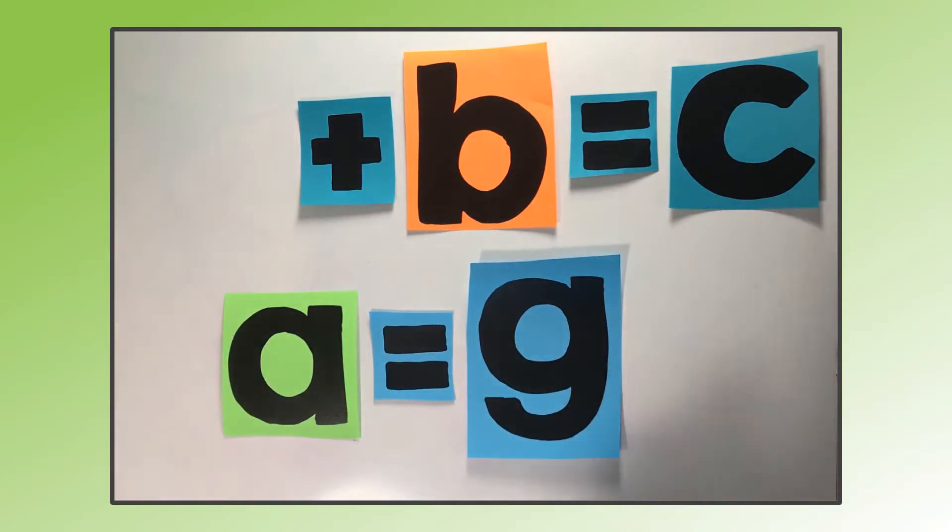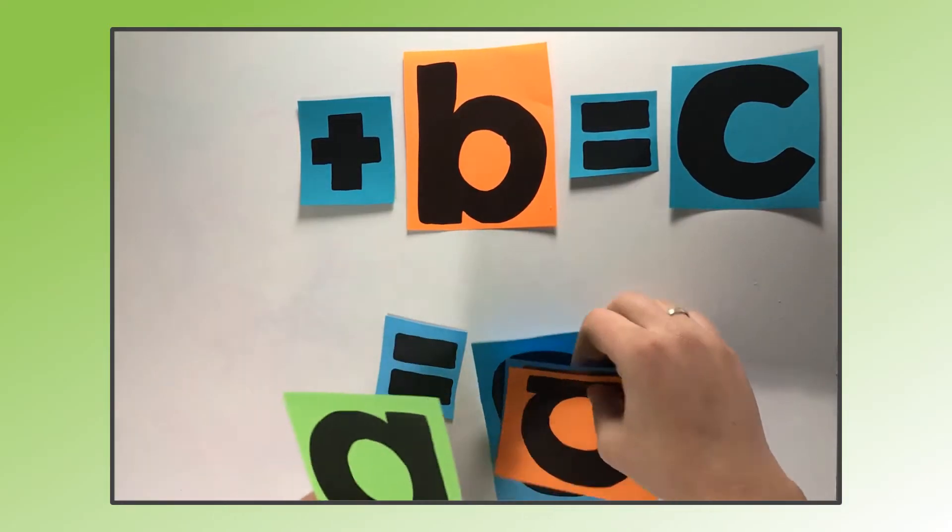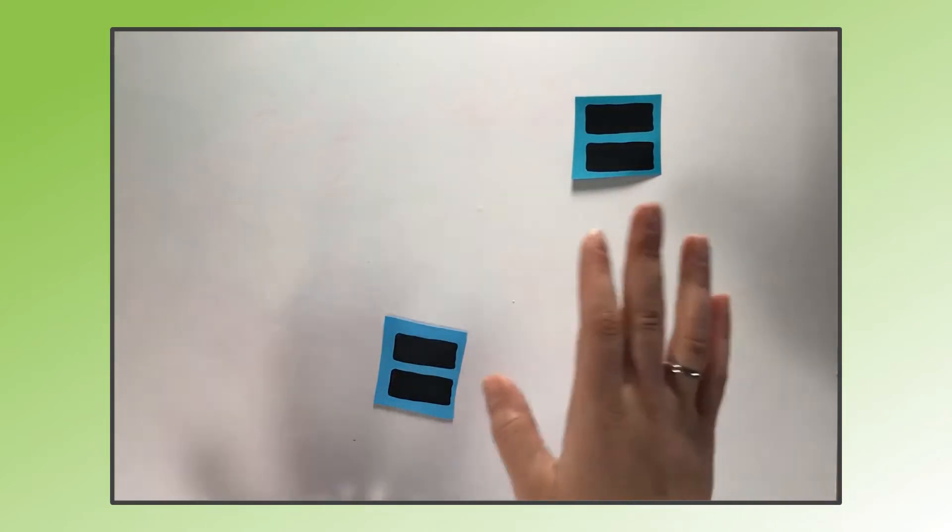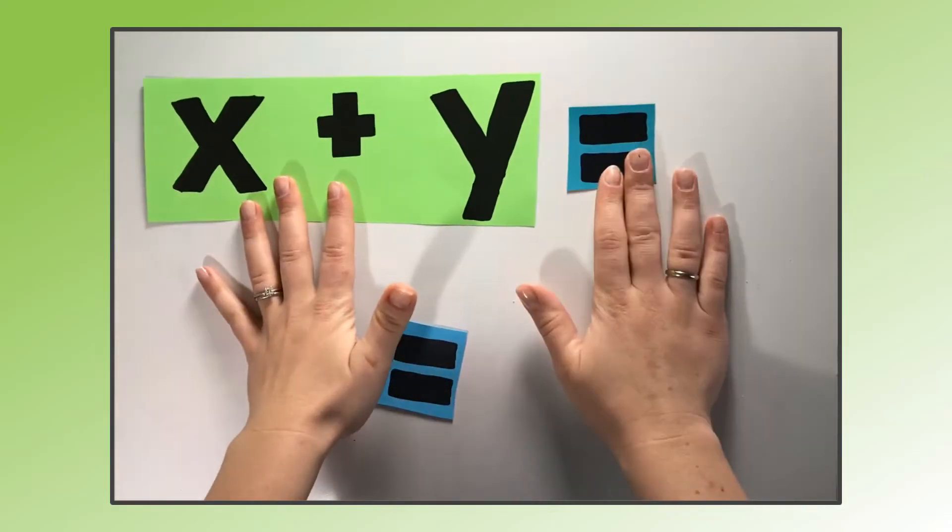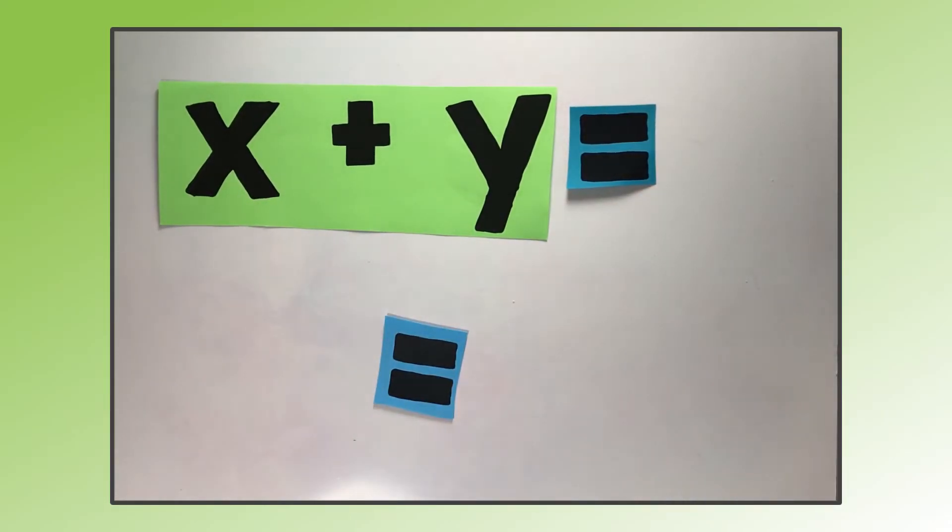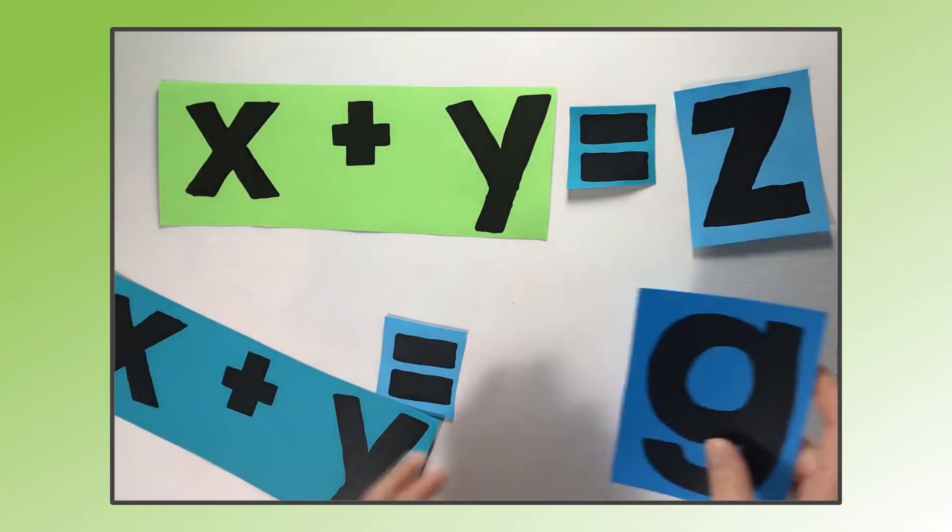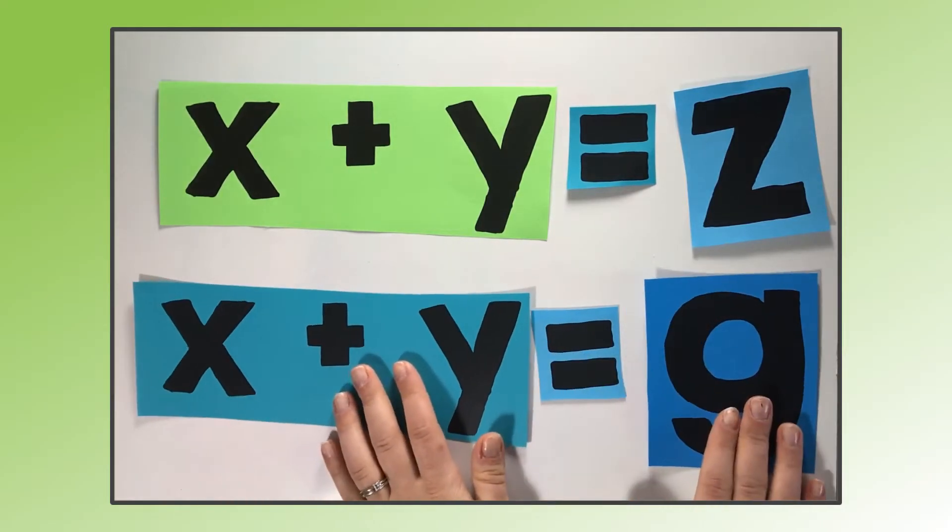Now the transitive property, on the other hand, is for when two numbers or variables or quantities are equal to the same thing, not necessarily each other right away as the given. So let's say we have x plus y equals z, two different equations.